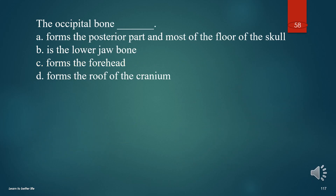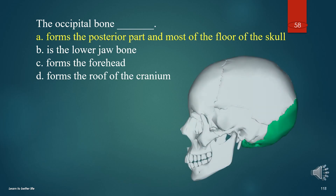The occipital bone? A. Forms the posterior part and most of the floor of the skull. B. Is the lower jaw bone. C. Forms the forehead. D. Forms the roof of the cranium. The answer is A. Forms the posterior part and most of the floor of the skull.